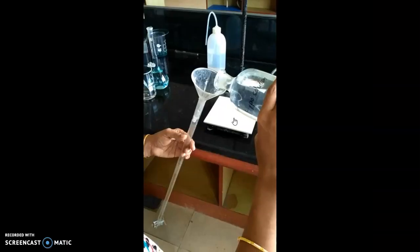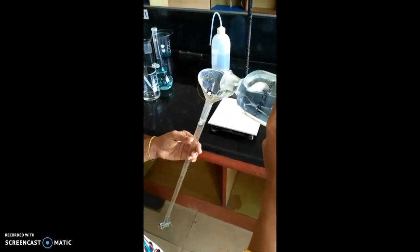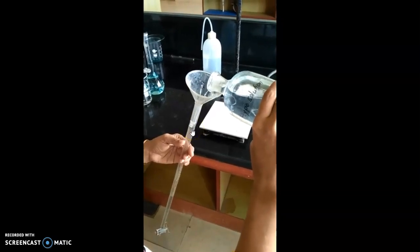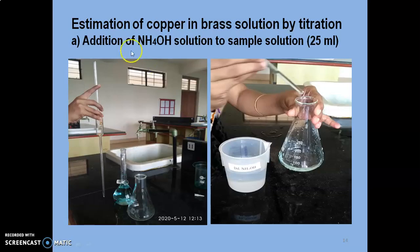The addition of hypo can be done through the funnel, and the initial reading has to be noted. 25 ml of standard brass solution has to be pipetted into a clean conical flask. To it, NH4OH is added to neutralize the nitric acid.